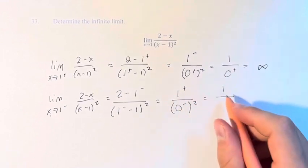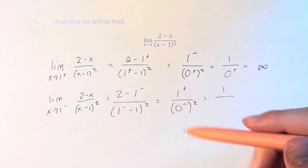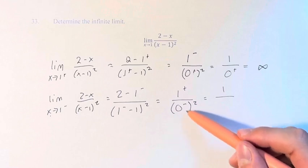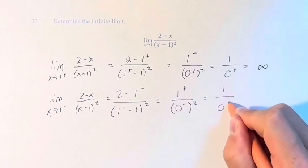Again, 1 from the right is just 1. It actually matters for 0 here. 0 from the left are negative numbers, but squaring them means we're approaching 0 from the right.